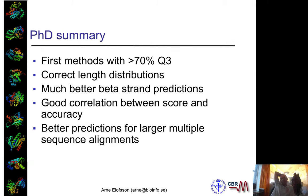It had correct length distributions for secondary structure elements and much better beta strand predictions.